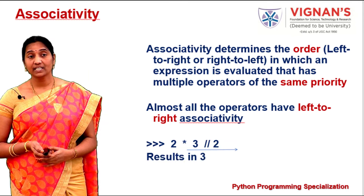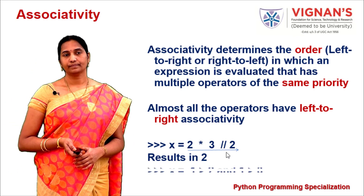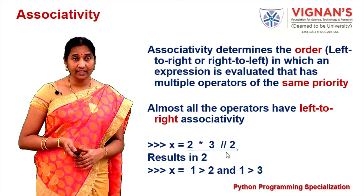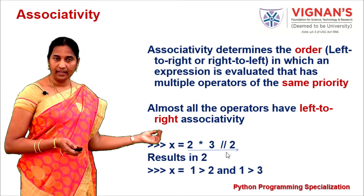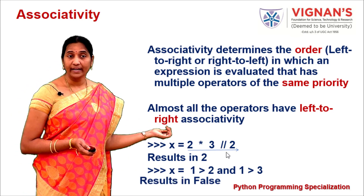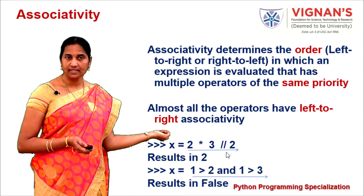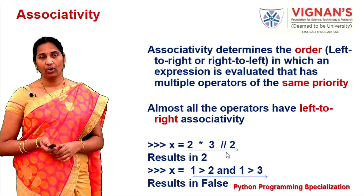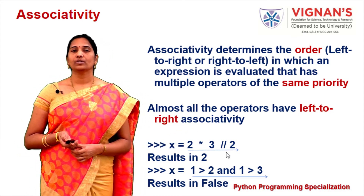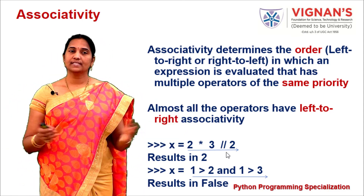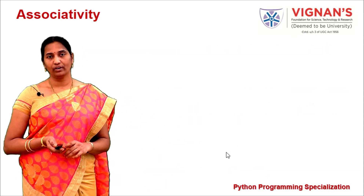Another example: 1 > 2 and 1 > 3. Following left-to-right associativity, evaluate 1 > 2 = False first, then 1 > 3 = False, then False and False = False. When operators share the same precedence, rely on associativity to resolve conflicts.